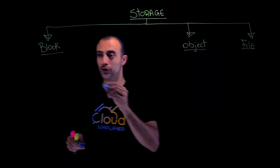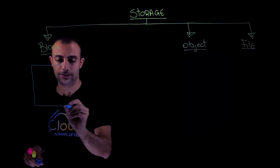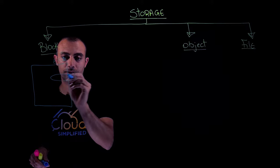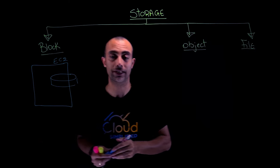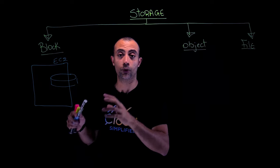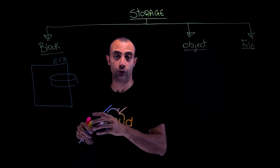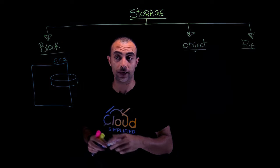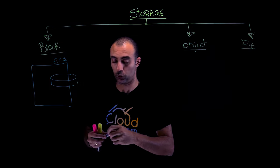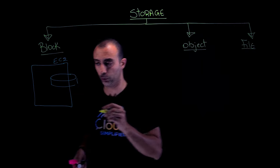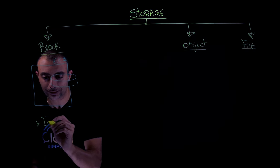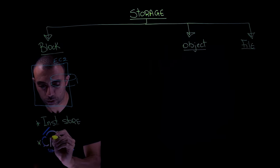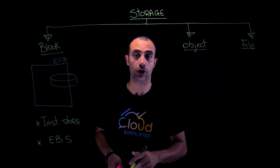Starting with block storage — you can imagine it as the hard disk attached to your EC2 instance. Block storage is for the most demanding, high-performing workloads and mission-critical applications like SAP, Oracle, and Microsoft. Here we have two types of services: the first is called instance store, and the second is called EBS, which stands for Elastic Block Store.